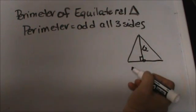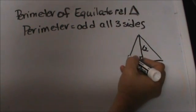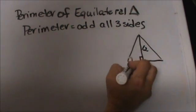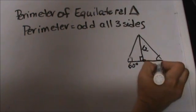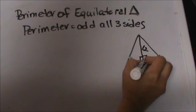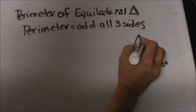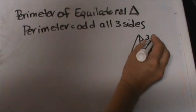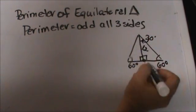We know that this is a 30-60-90 because inside an equilateral triangle you have angles that are all 60 degrees. So when you draw that altitude down you have a right angle, a 90 degree angle, which forces this up here to be a 30 degree angle.